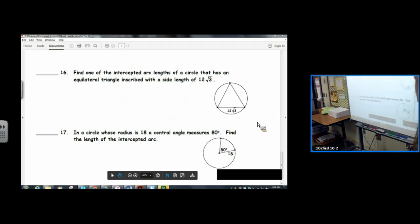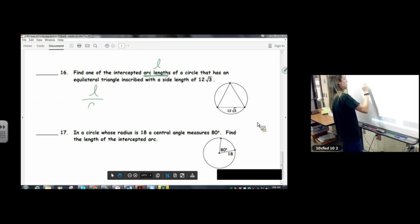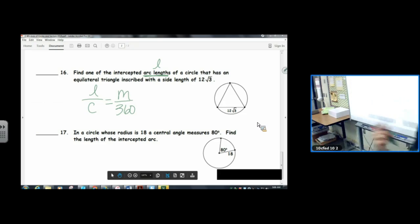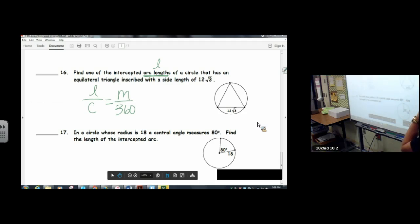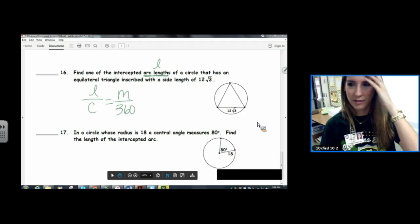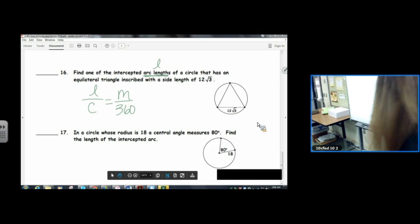16. Find one of the intercepted arc lengths. I'm going to stop right there. I know arc length is L, so I know that whenever I get to it, somewhere in the problem, I'm going to be using our new proportion: L over C equals M over 360. That has an equilateral triangle inscribed with a side length of 12 root 3. Now, right now we have zero parts of that formula. We need an M and we need a C. We don't know either of those, so we're going to need to get creative. Let's draw the center of our circle. Let's draw an angle.